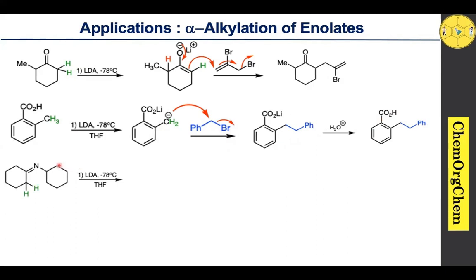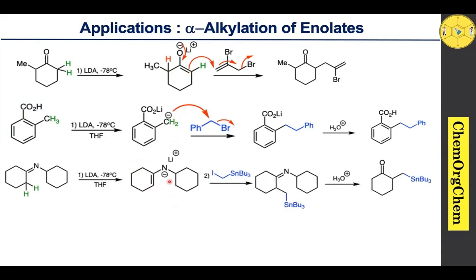LDA is also useful to generate azaenolate ions. This compound is derived from cyclohexanone and cyclohexylamine in the presence of para-toluenesulfonic acid. The alpha carbon on each side has two hydrogens. When LDA is used, it takes one of these alpha hydrogens to generate the corresponding azaenolate ion. This azaenolate ion, just like an enolate ion, reacts with an alkyl halide — here an iodo compound — which quickly reacts to generate the corresponding alkylated compound, which then undergoes acid hydrolysis to yield the corresponding alkylated ketone as a product.